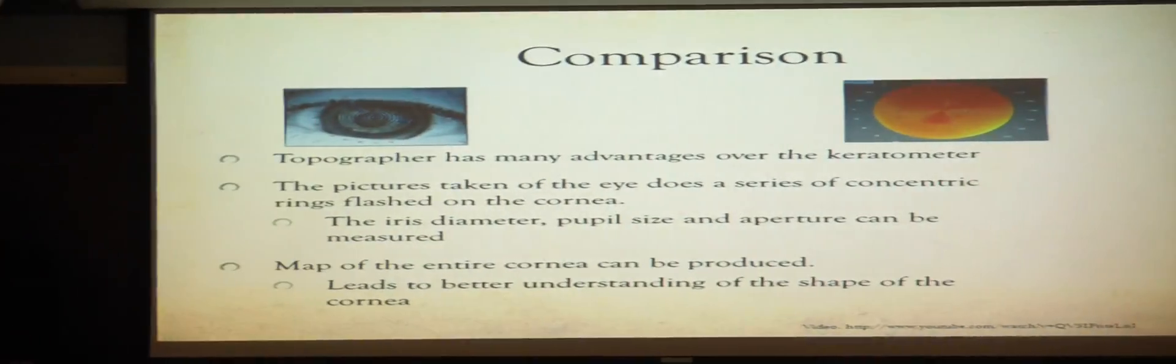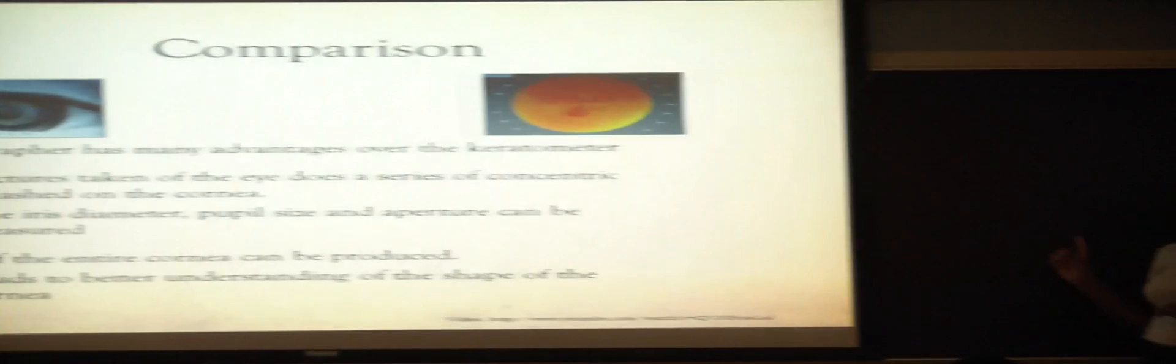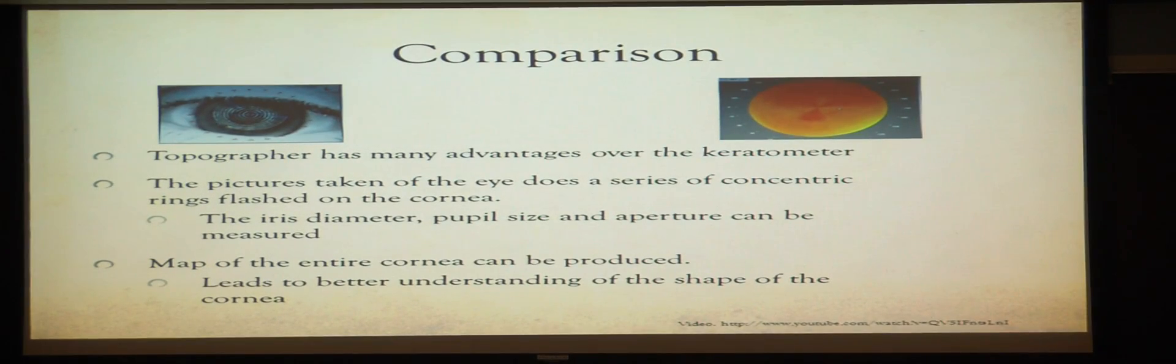Now we're going to do a comparison of the keratometer to another device, the topographer. It was found that the topographer had many more advantages over the keratometer. For the topographer, it actually takes a picture of the eye and draws a series of concentric circles, as you can see in that top picture on the left right there. From that picture, you can determine the eye's diameter, the pupil size and aperture. The right side shows the topography from an image of the eye. As you can see, it shows the entire surface of the cornea, so you can get a better understanding of astigmatism. Whereas the keratometer will only show from the center, three millimeters from the center, this little area right here, to determine astigmatism. Topography will give you a better understanding so you can apply it to contact lenses and glasses.